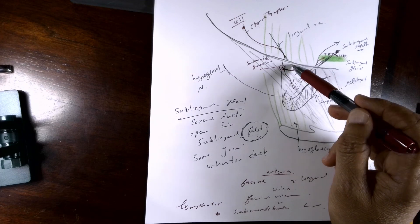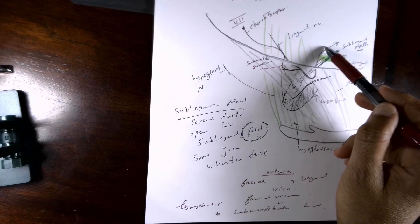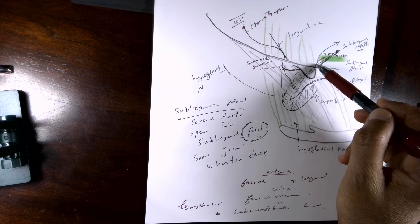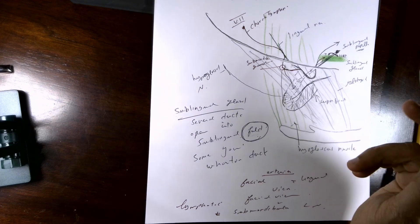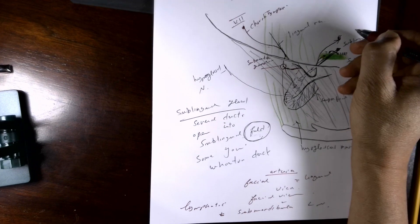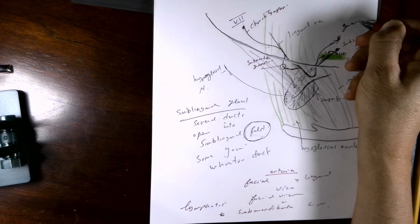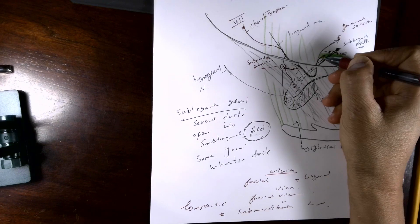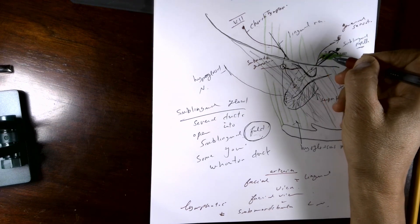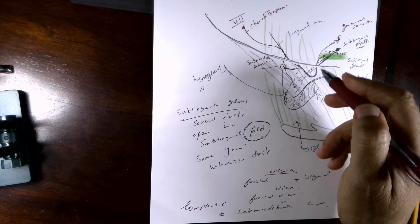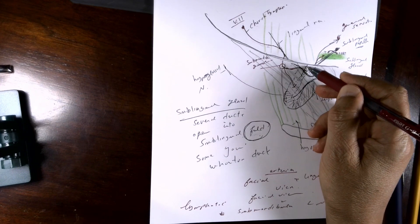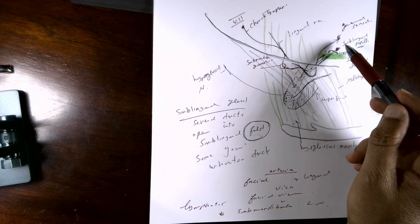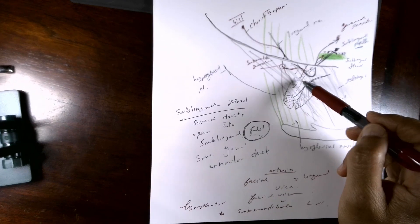If there is injury to the lingual nerve, remember it carries general sensation from the tongue and also carries the chorda tympani, which has two functions: parasympathetic supply to the sublingual and submandibular glands, and taste sensation. So injury to the lingual nerve here may lead to loss of general sensation from the anterior two-thirds of the tongue, loss of taste sensation, and loss of secretomotor fibers to these two glands.